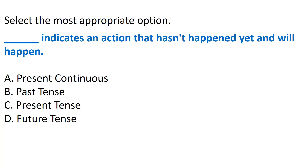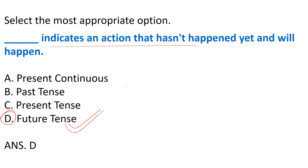Next question: 'Select the most appropriate option - which tense indicates an action that hasn't happened and will happen?' Options: past continuous, present continuous, past tense, present tense, or future tense. Obviously, future tense is the correct answer - Option D. Future tense indicates an action that hasn't happened yet and will happen in the future.